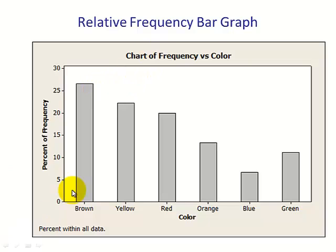So if we look at the brown, we can see the brown is about 26, 27%. Blue is about 6%, 6 or 7%.